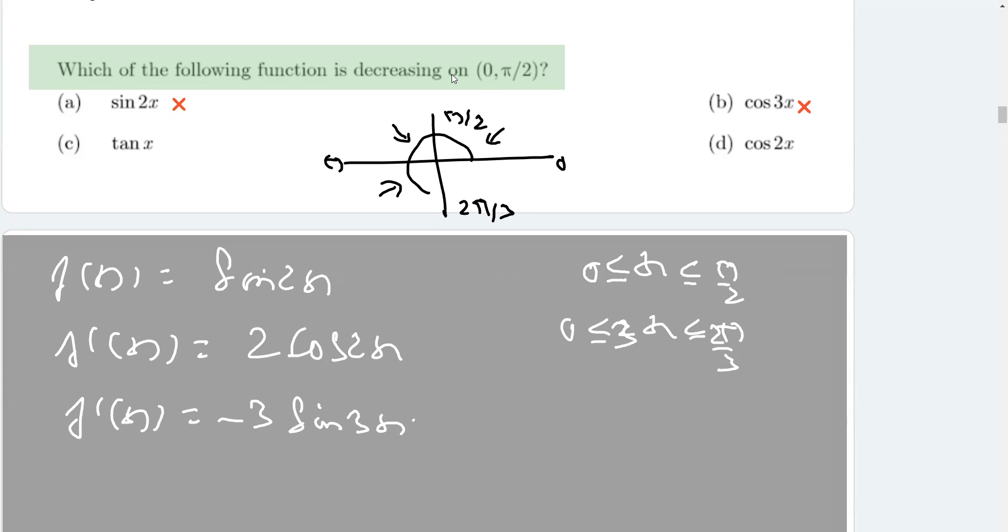Now, let's come to the next part. This is tan x. Tan x derivative is what? Sec squared x. And you know this case, square of any number is positive. So, this is going to be increasing.